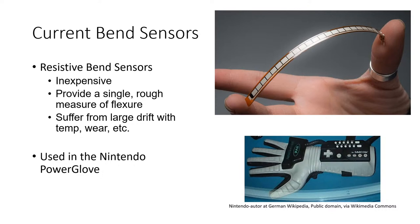The most common current solution is resistive bend sensors. They're very inexpensive and have been around for over 20 years, but they have a lot of drawbacks. Basically, they're a strip of plastic with deposited carbon — when you bend the strip, the carbon is strained, changing the resistance. What you measure is resistance as a function of flex. You only get one number — a very rough measure of flexure — with no detail about the actual curve shape.